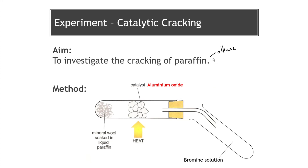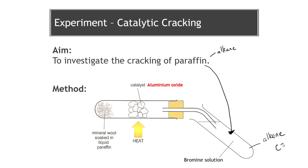Paraffin is an alkane and it is a saturated molecule - there are no carbon to carbon double bonds. So if we put paraffin directly into our brown bromine solution, the bromine solution would not turn clear and colourless, because the paraffin is an alkane and doesn't have any carbon to carbon double bonds. Bromine solution turns clear and colourless only if we have something like an alkene where there is a carbon to carbon double bond present. So if we start with paraffin and put it directly into the bromine solution, we'd see no colour change.